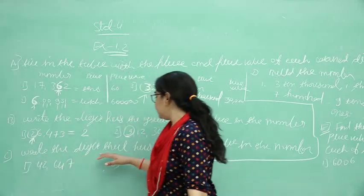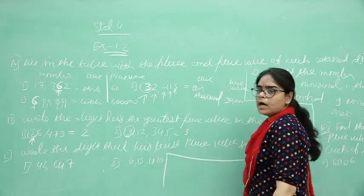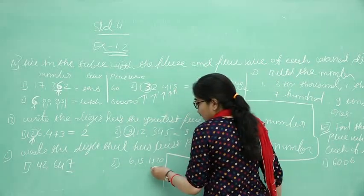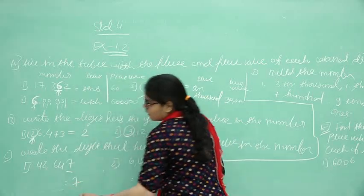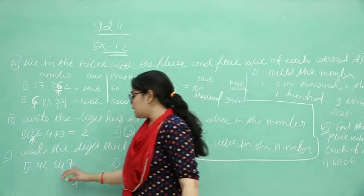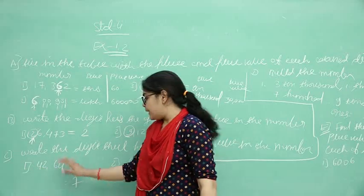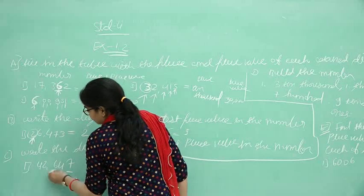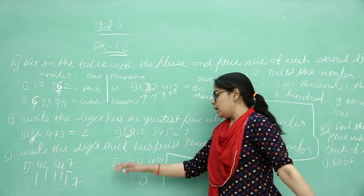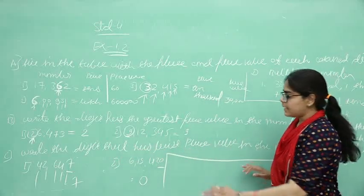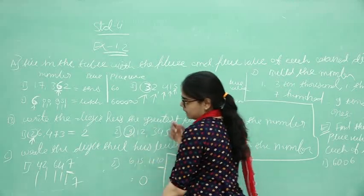Now see, write the digit that has the least place value in the number. Always least place value is which one? Here, 0 and here 7. Because 1 is the smallest. 1 place of 1 is the very smallest. Then 1, 10, 100, 1000, 10,000.